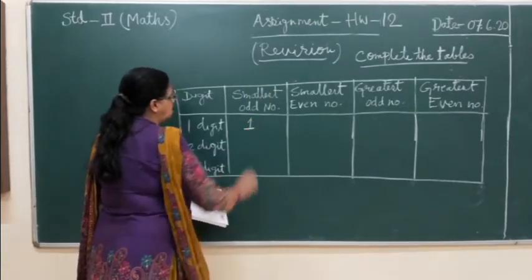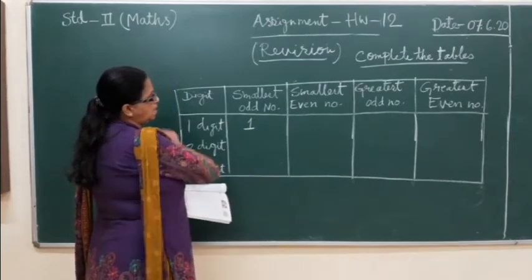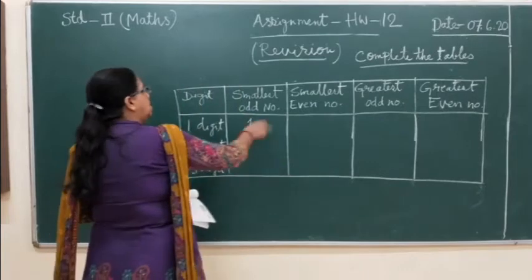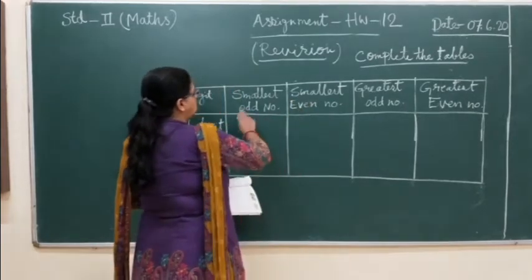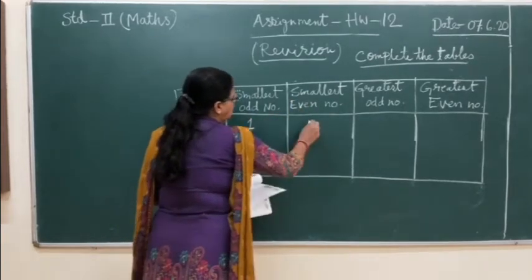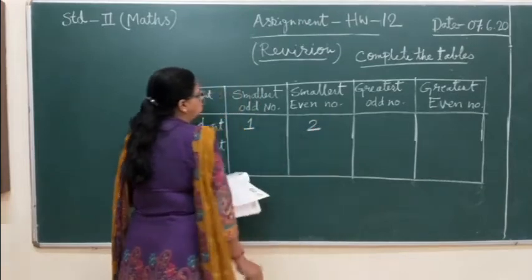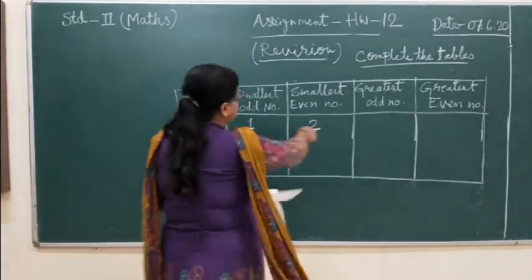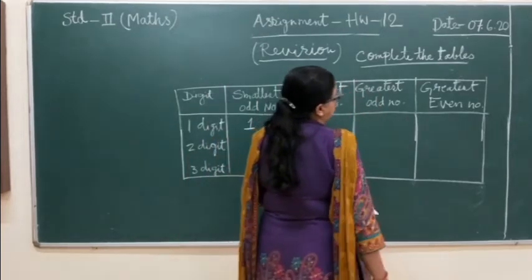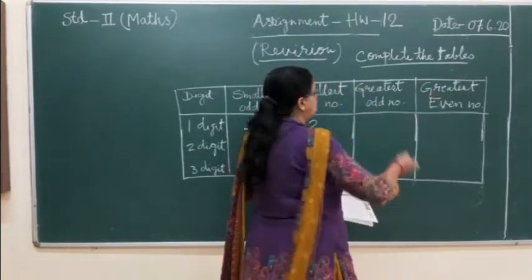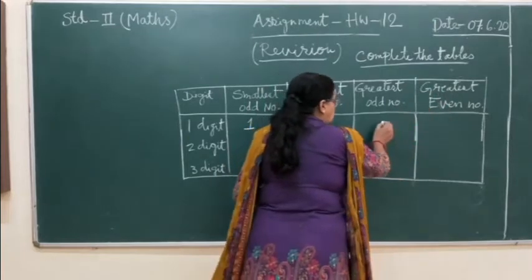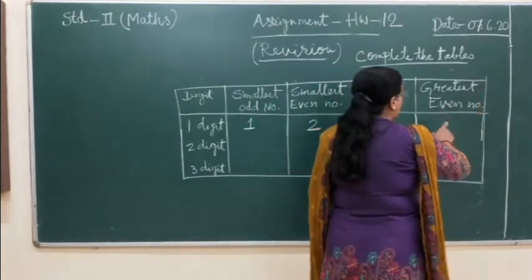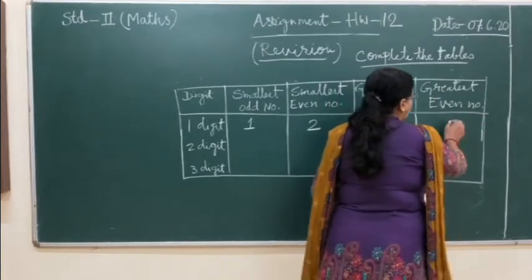One digit smallest even number: 2. One digit greatest odd number: the greatest number is 9, and that is odd, so 9. One digit greatest even number: 9 is odd, so 8 is the greatest even number.